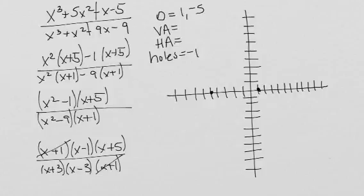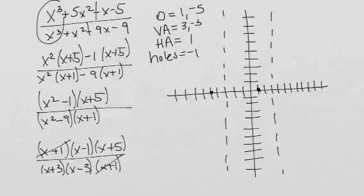We know that we have a vertical asymptote at 3 and negative 3 because those are the roots of our denominator. And we know that we have a horizontal asymptote at 1 because we have the same degree in the numerator and the denominator, and x cubed divided by x cubed is 1.